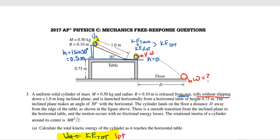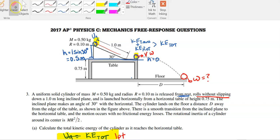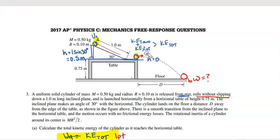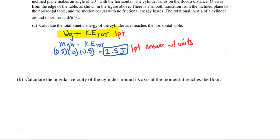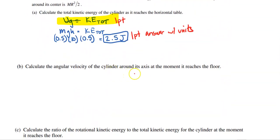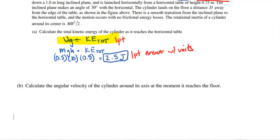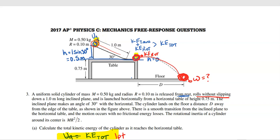As it flies through the air, there are no forces making it rotate more — no air resistance, and gravity is not providing a torque in this case. Think of dropping a pencil: it doesn't rotate. So KE rotational at the top of the table will be exactly the same at the floor. It only picks up translational velocity during the fall.